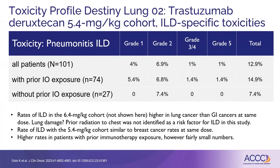Let's talk about pneumonitis. Pneumonitis is something we particularly worry about in lung cancer, given that patients already have diseased lungs. Pneumonitis or ILD — essentially one and the same — rates at the 5.4 milligrams per kilogram cohort in DESTINY LUNG-02 were about 12.9% overall. Interestingly, they parsed this out by patients who had prior immunotherapy exposure, since this drug is approved in the second-line setting. The rate was about 15% in patients with prior immunotherapy exposure versus only 7.4% in patients without, suggesting prior immunotherapy could predispose them to this.